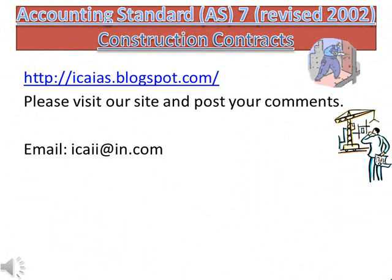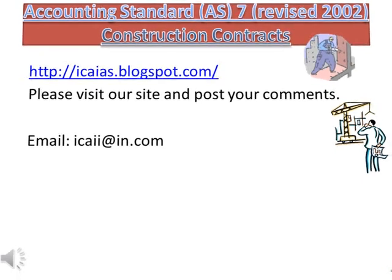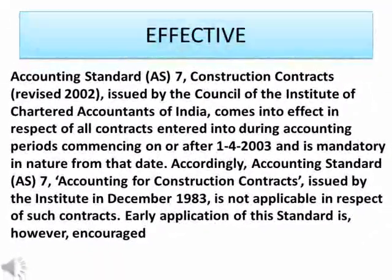Accounting Standard AS-7, Revised 2002: Construction Contracts. This standard is issued by the Council of the Institute of Chartered Accountants of India and comes into effect in respect of all contracts entered into during accounting periods commencing on or after April 1, 2003, and is mandatory in nature from that date.